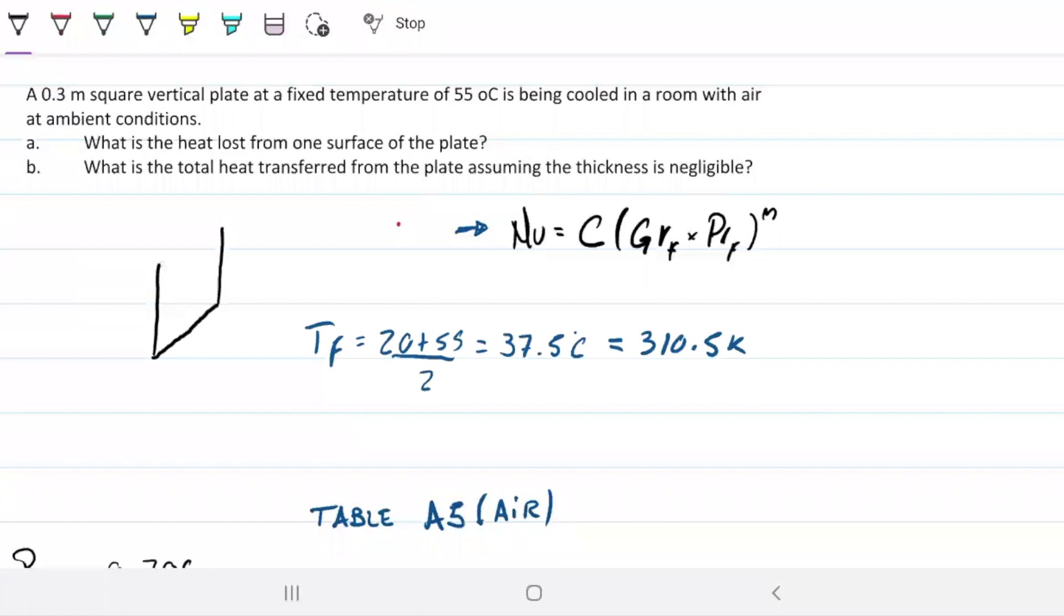So first things first, let me go ahead and draw our flat plate. I have a vertical flat plate and it's 0.3 by 0.3 meters. The temperature is 55 celsius, and this is at room temperature, so I chose 20 celsius.